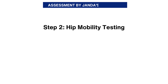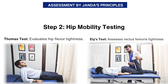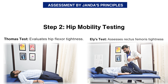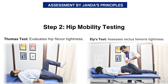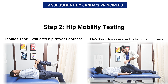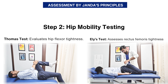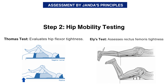The second step of assessment includes hip mobility testing. We are going to perform two special tests: the Thomas test and the Ely's test. These tests tell us about the hip mobility, and if they are positive, it means lower crossed syndrome might be the diagnosis.